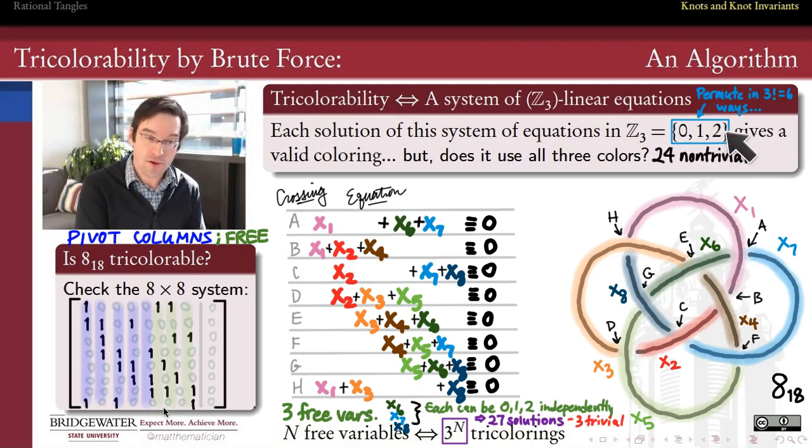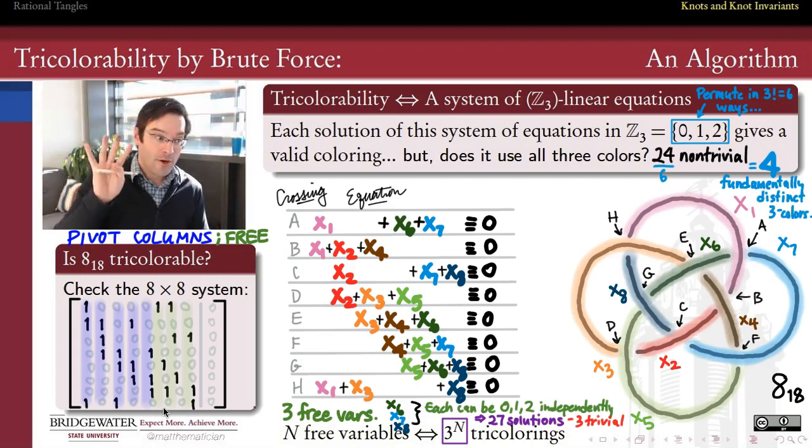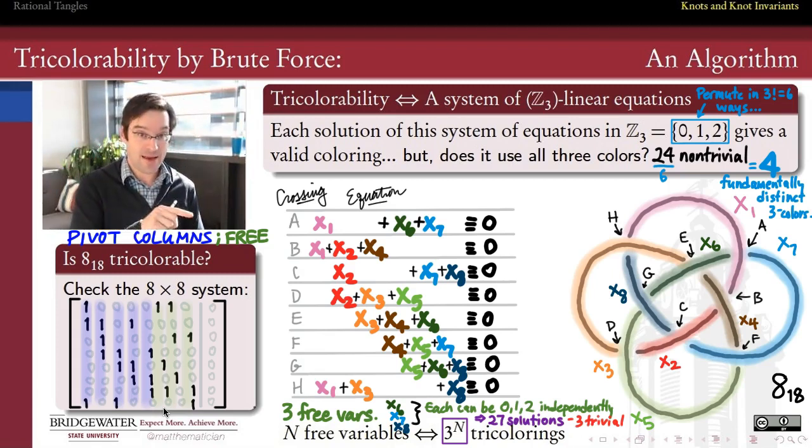And quotient out by the number of permutations that I could perform on this set, which is going to give me colorations that are all the same. If I quotient out by that, I'm going to figure out how many essentially different choices of colorations that I have. And since there are three factorial, or six different ways, to permute 0, 1, and 2, and each of those permutations is going to give me the same tricoloration up to a relabeling of the colors, then what I can do is divide this 24 by that 6, by that 3 factorial, to find out that really there are four fundamentally distinct ways of tricoloring this knot, 8_18.